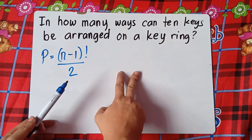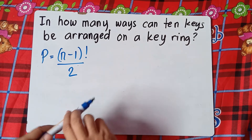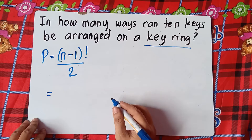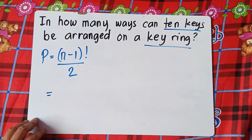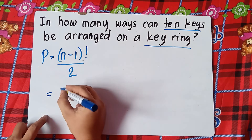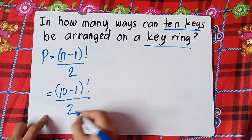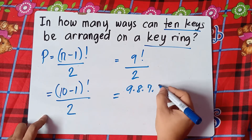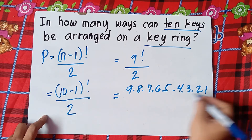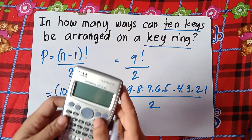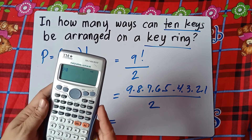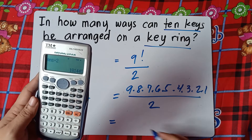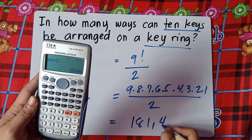In how many ways can ten keys be arranged on a key ring? We have the word 'key ring,' so the formula is N minus one factorial divided by two. Our N is 10, so 10 minus one factorial over two — that's nine factorial over two. Nine factorial equals 362,880, divided by two gives us 181,440 ways.